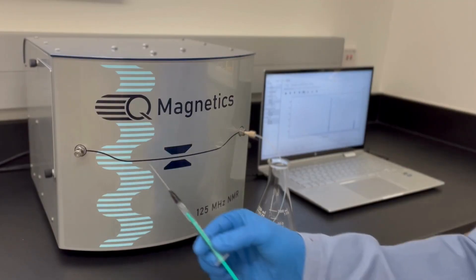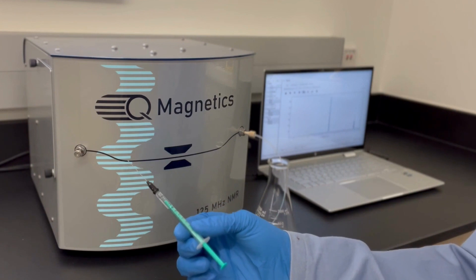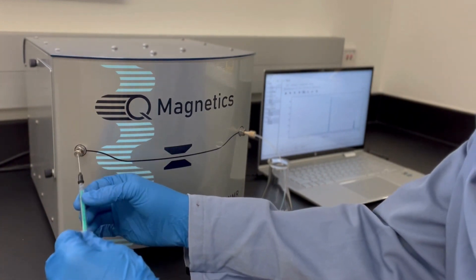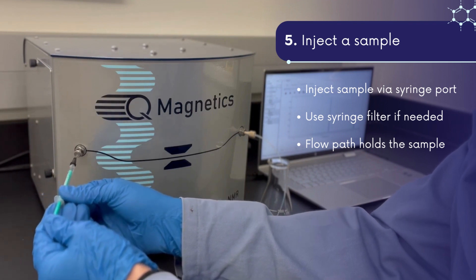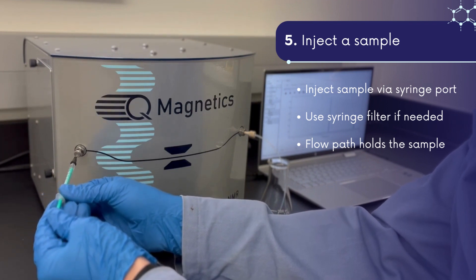Now we are ready to load our sample. Simply insert the blunt tip needle into the syringe port and inject the sample. If the sample contains suspended solids or undissolved material, use a syringe filter while injecting.